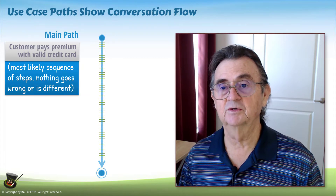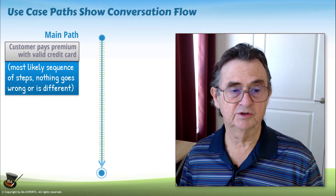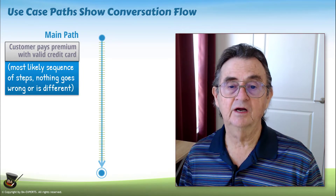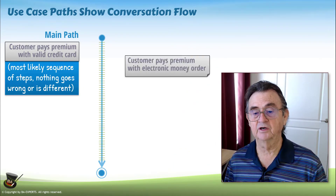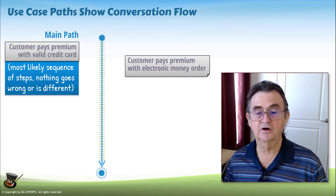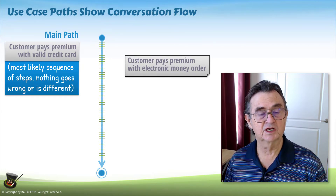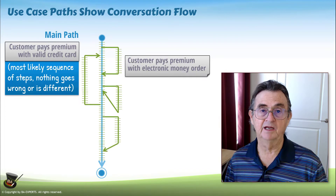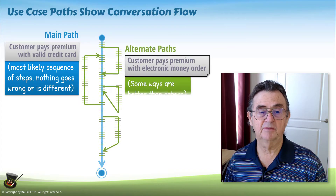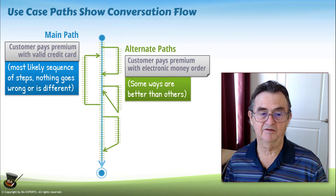The example we're going to use here is a customer paying the premium with a valid credit card — then the flow is going to go directly down the main line. However, what happens if they happen to pay with an electronic money order or something like that? There are situations which are going to be different. Those in a use case diagram are indicated by branching off of the main flow, the main path, and having an alternate path in some way, shape or form, and then going back to rejoin the main path.